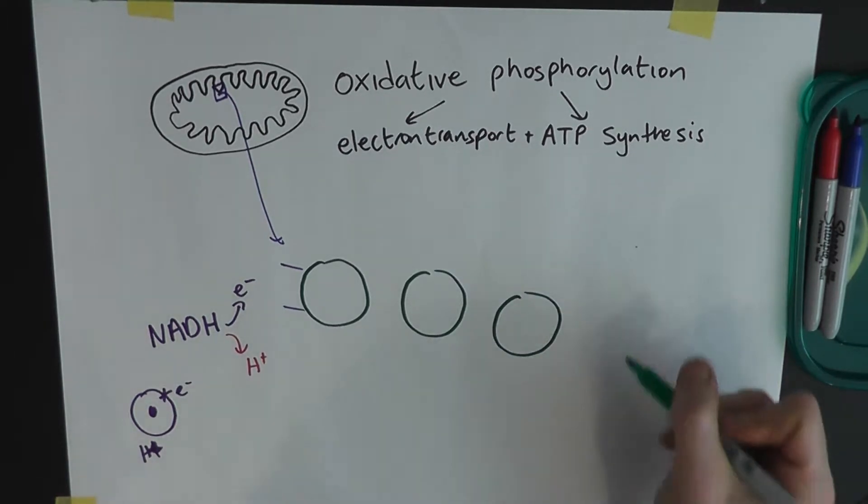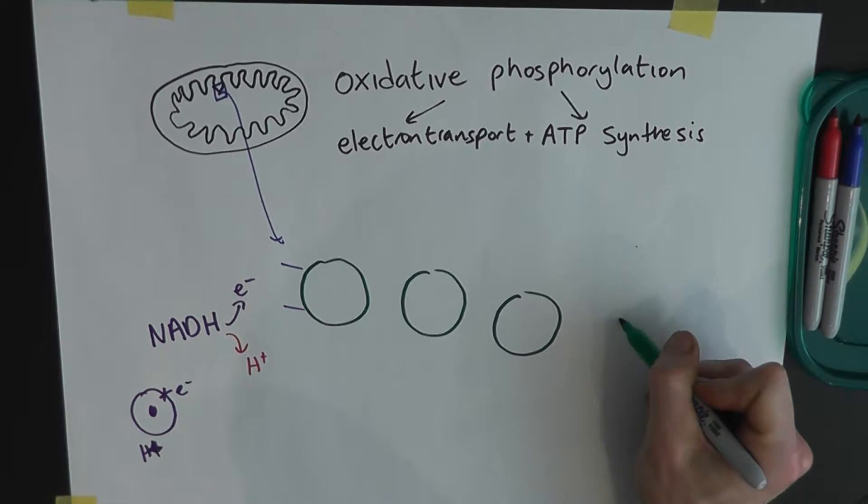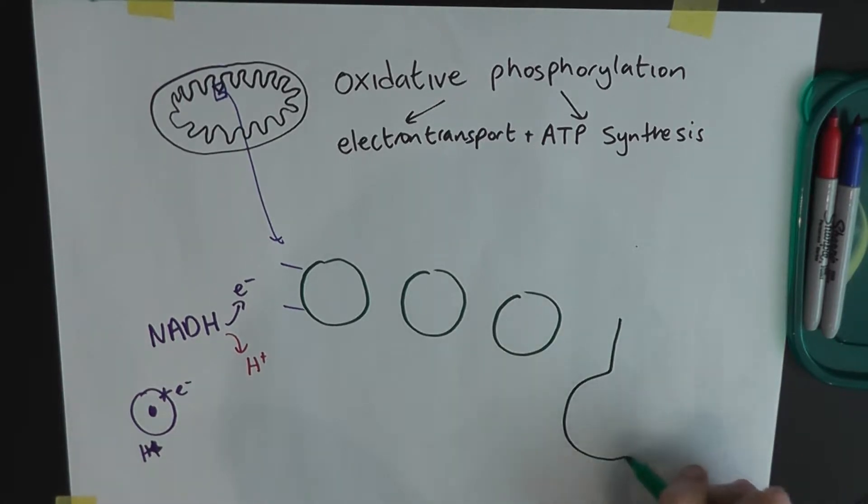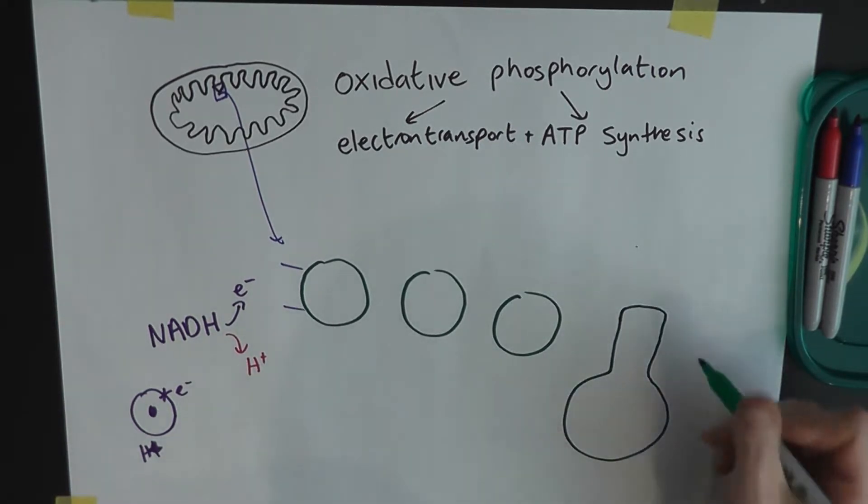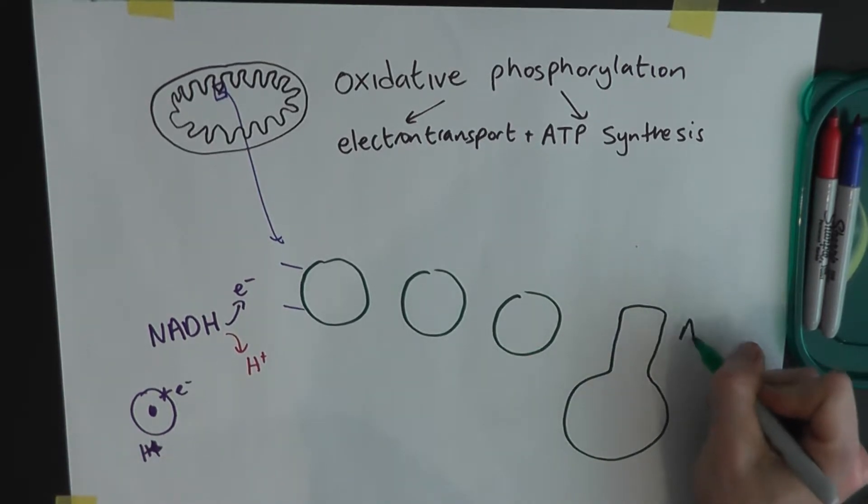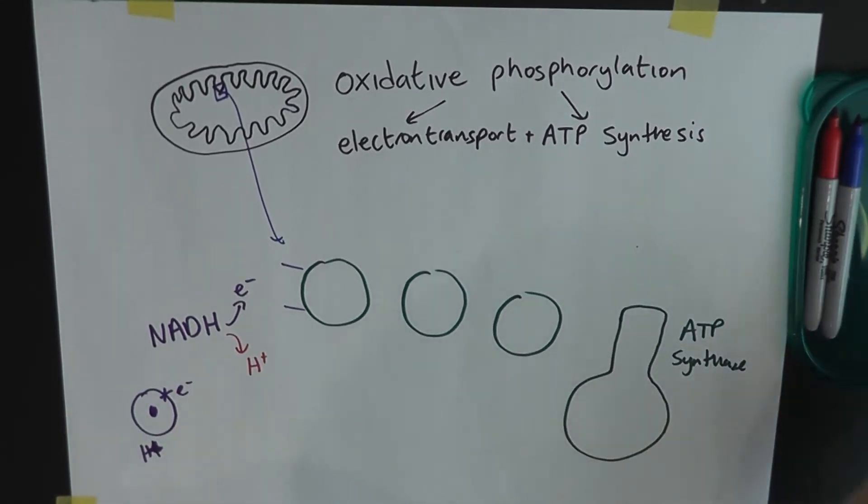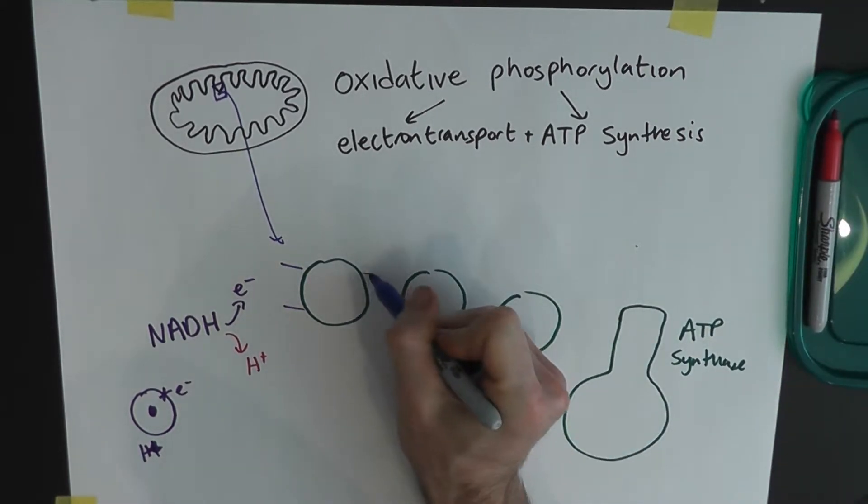And there's a fourth protein here, which is one of the best enzymes in the human body. And that protein is called ATP synthase. Guess what that one does? It synthesizes ATP.